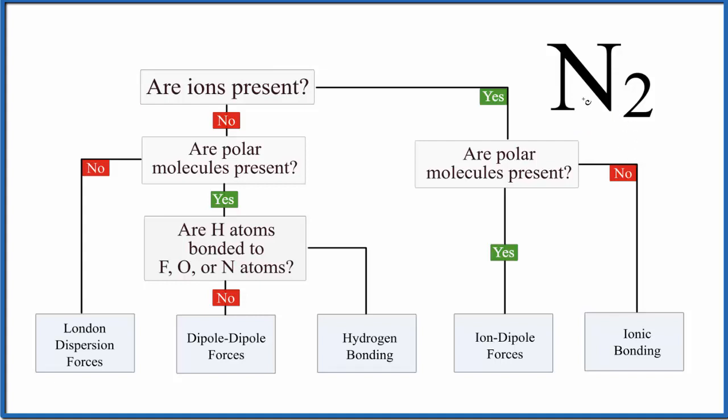The first question we need to ask is, are there ions present? So do we have a negative or a positive after this molecule here? And we don't, so no ions are present. In fact, we can just get rid of all this section of our flow chart.